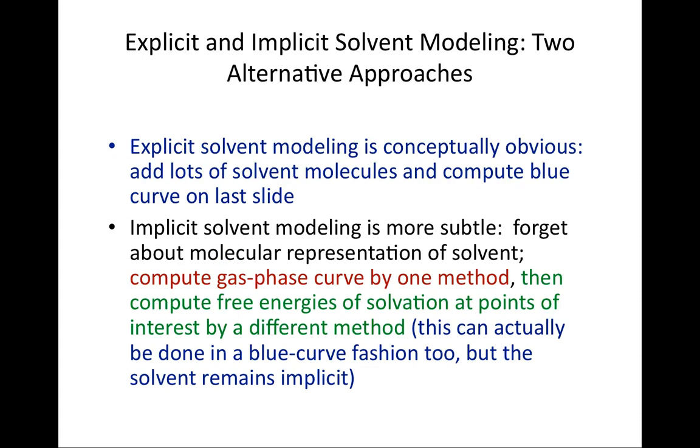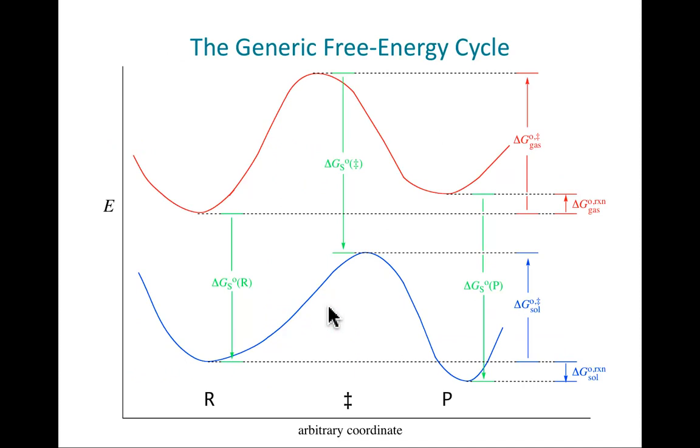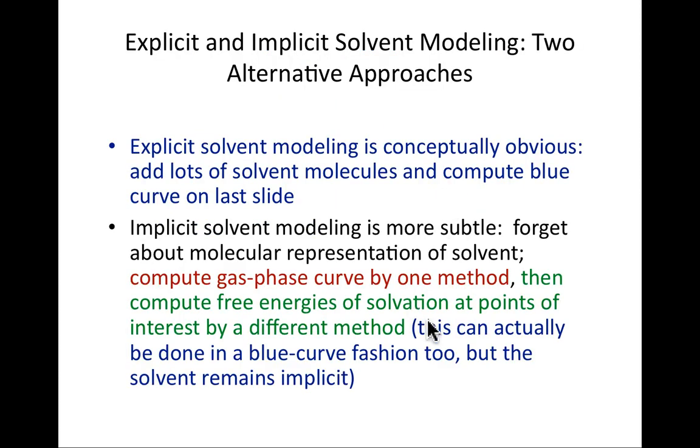The implicit solvent modeling is a bit more subtle, and it says, I'm not going to represent the surrounding solvent. Instead, I will indeed compute the gas phase, and then somehow I'm going to get the free energies of solvation at any point I'm interested in. It's the green lines that couple stationary points, for example, and let you determine the free energy of the product in solution relative to the gas phase. And once I've done that, I will indeed have all the necessary free energy information to compute things like activation free energy and equilibrium free energy. And of course, you could do it for every point along the reaction coordinate. That would generate the entire blue curve, but you may not need to. You may just need stationary points. The solvent would remain implicit either way.